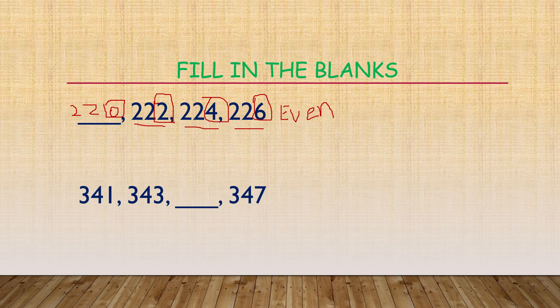And here 341, 343, and 347. If you observe, what are the end digits? 1, 3, and 7. These all are odd numbers.